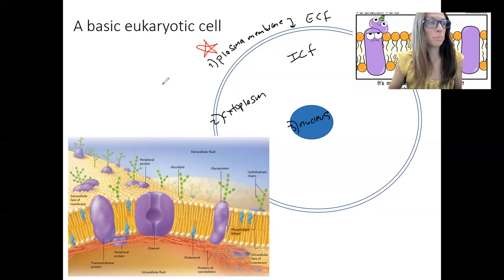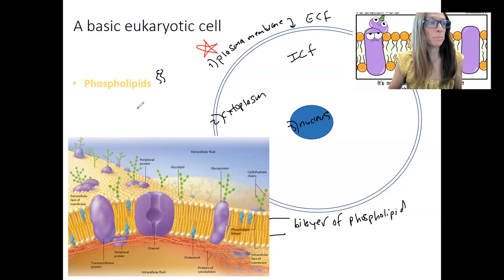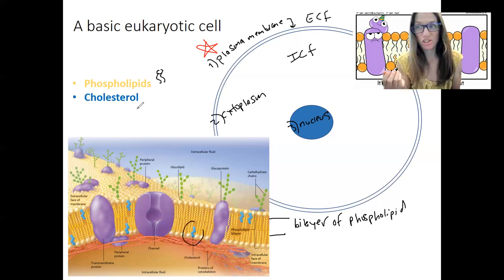Phospholipids are the yellow shown down here. They make up a bilayer — a bilayer of phospholipids. You will have a whole lecture on the phospholipid bilayer itself and the important structures of phospholipids. They make up the bulk of the plasma membrane, but they're not the only thing. Besides that, there is cholesterol — a precursor to all steroids — which plays a role in the rigidity of the cell membrane. We won't talk about cholesterol much more in the cell membrane.